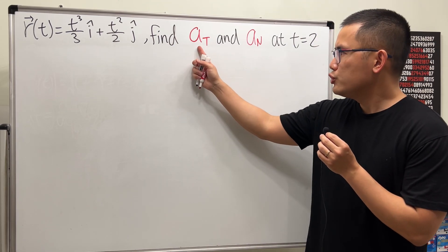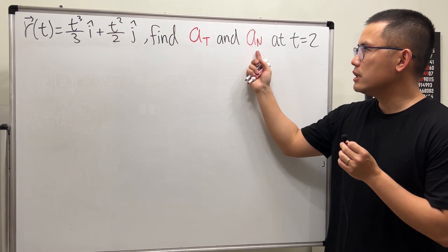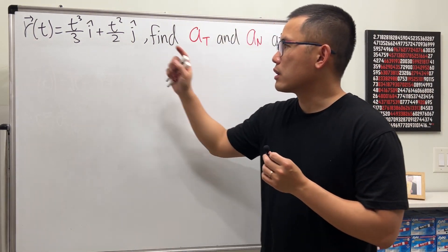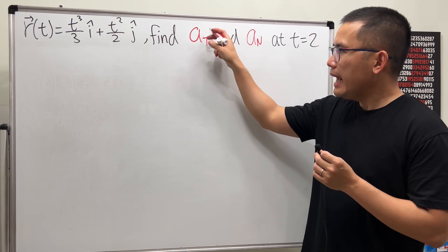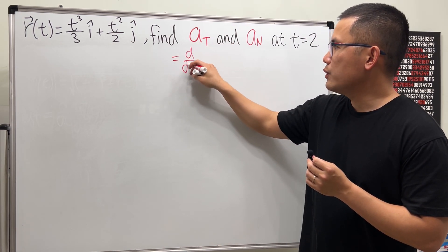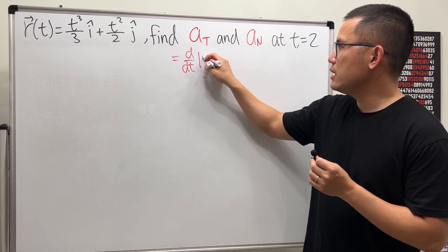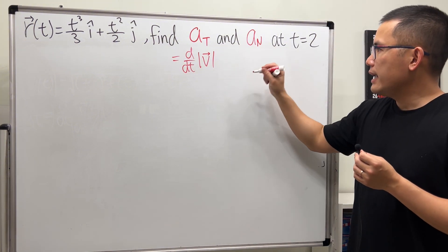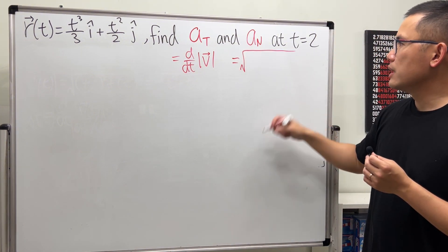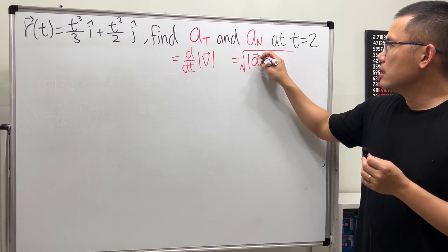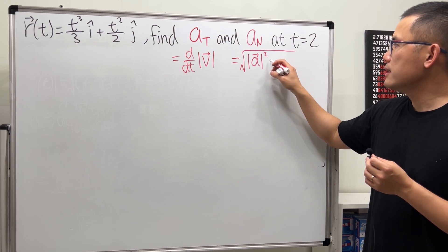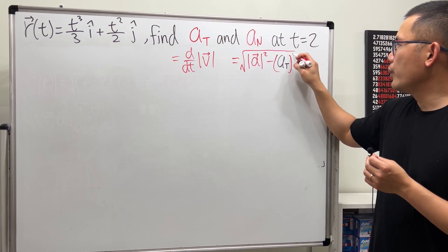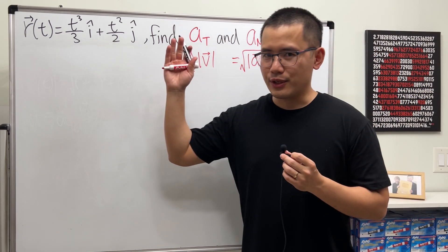Let's see how we can find the tangential component and the normal component for the acceleration, where we want t to be 2. Here we have our curve. Recall that Aₜ is equal to the derivative with respect to t of the speed — the magnitude of the velocity. And for Aₙ, this is equal to the square root of the magnitude of the acceleration squared minus Aₜ squared.